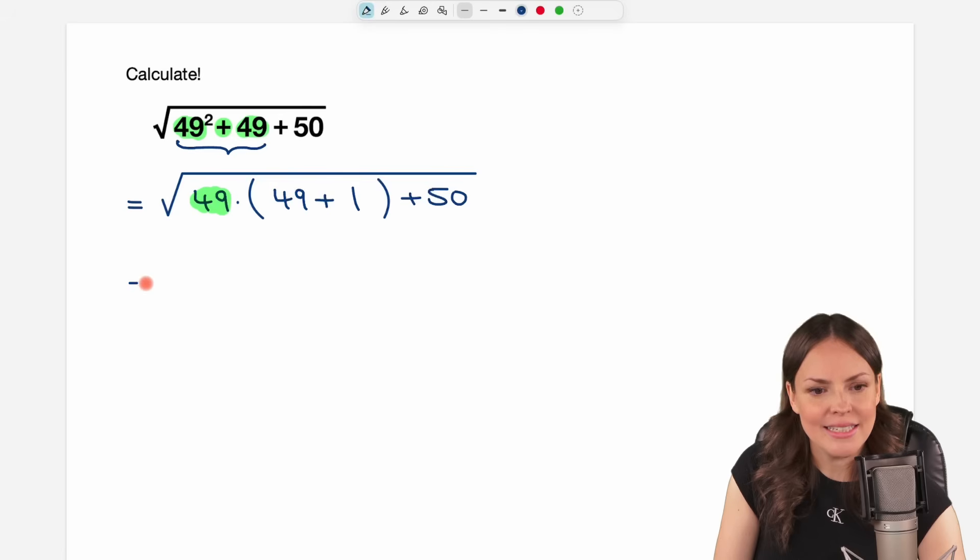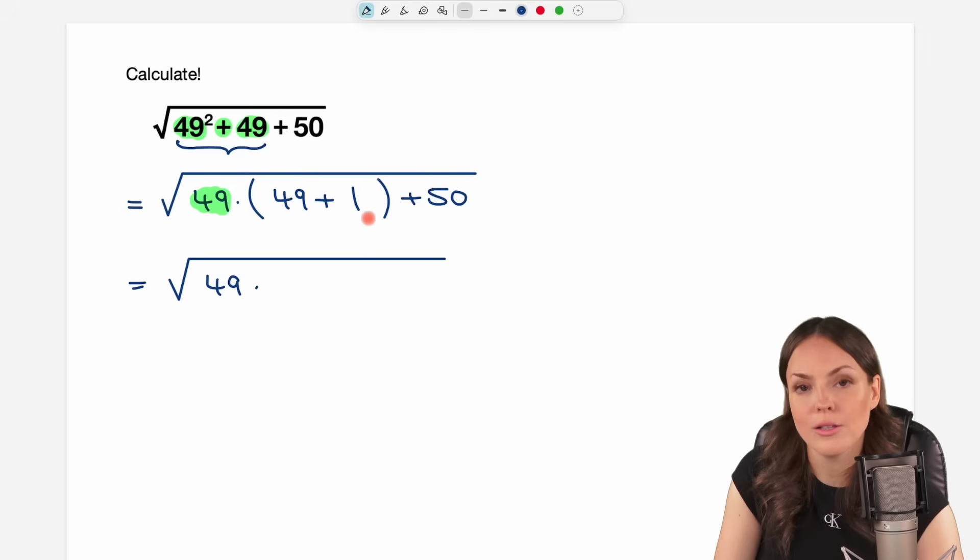Okay, but then this calculation now is way easier. We still have the square root. We have the 49 here. We multiply it by 49 plus 1, which is just equal to 50. And then we add the 50 here at the end.